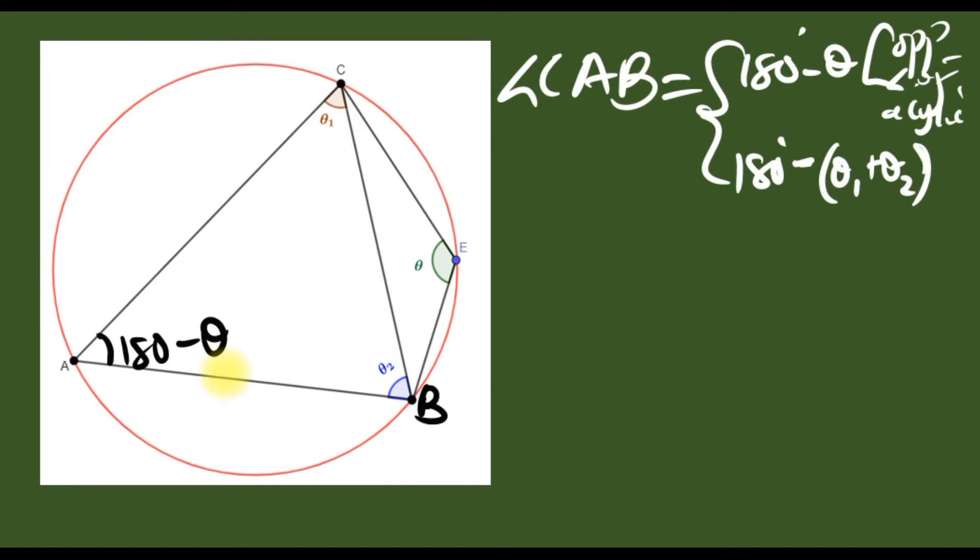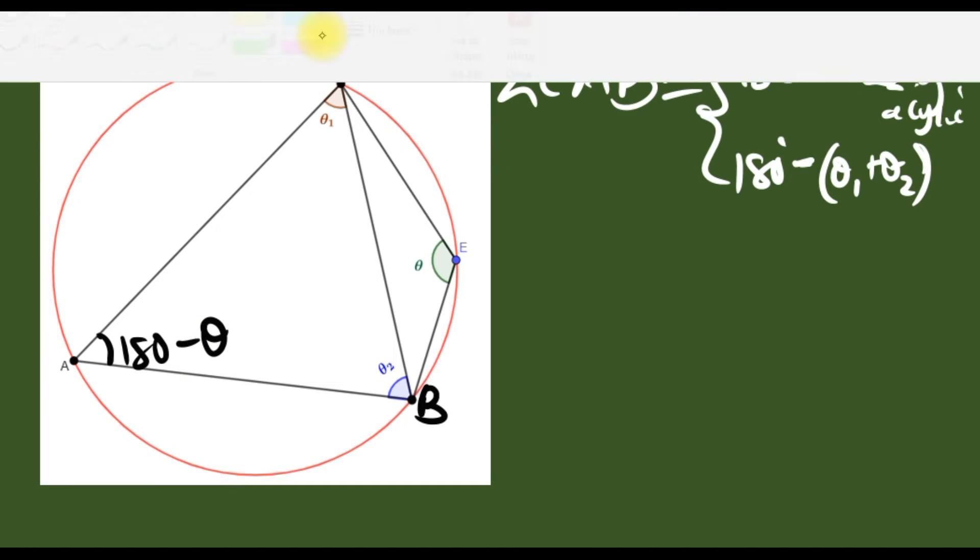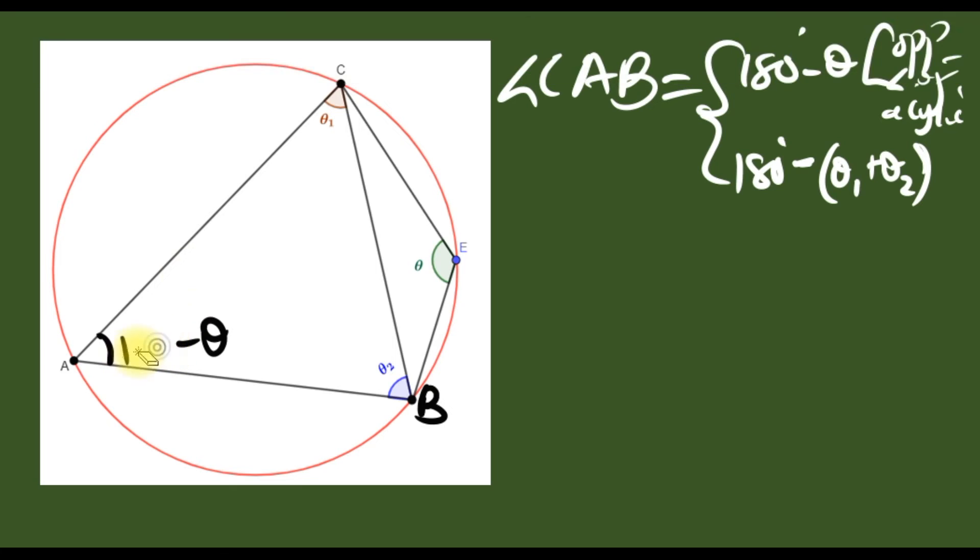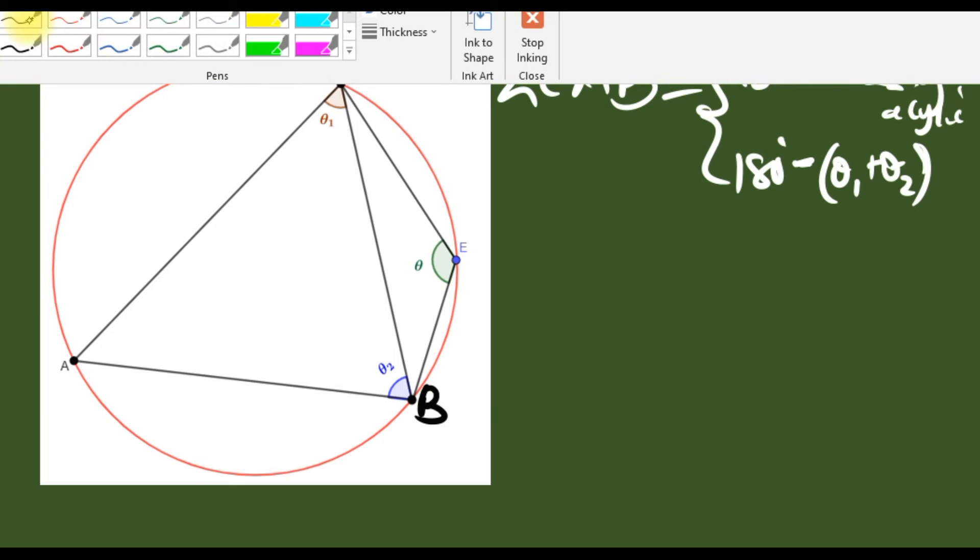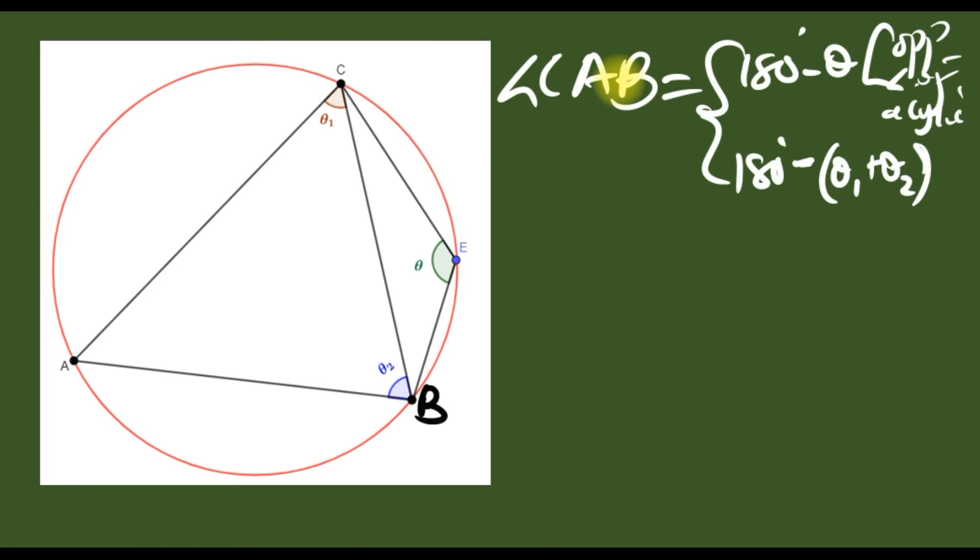Because you know it's a triangle, if you sum all the angles the answer is 180. So I'm saying that angle CAB is either 180 minus theta because of opposite angles of a cyclic quadrilateral, or is 180 minus theta one plus theta two because of angle sum theorem for triangles.